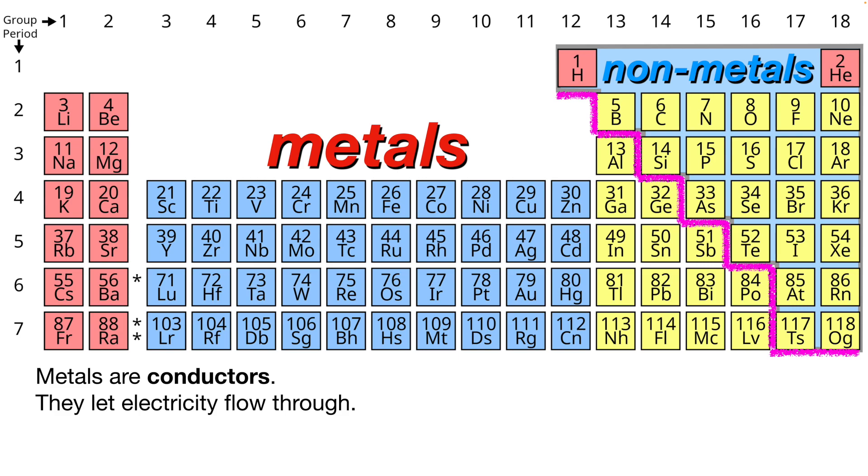Metals are conductors. This means they let electricity flow through them. Non-metals are insulators, which is the opposite. They don't let electricity flow through as easily.